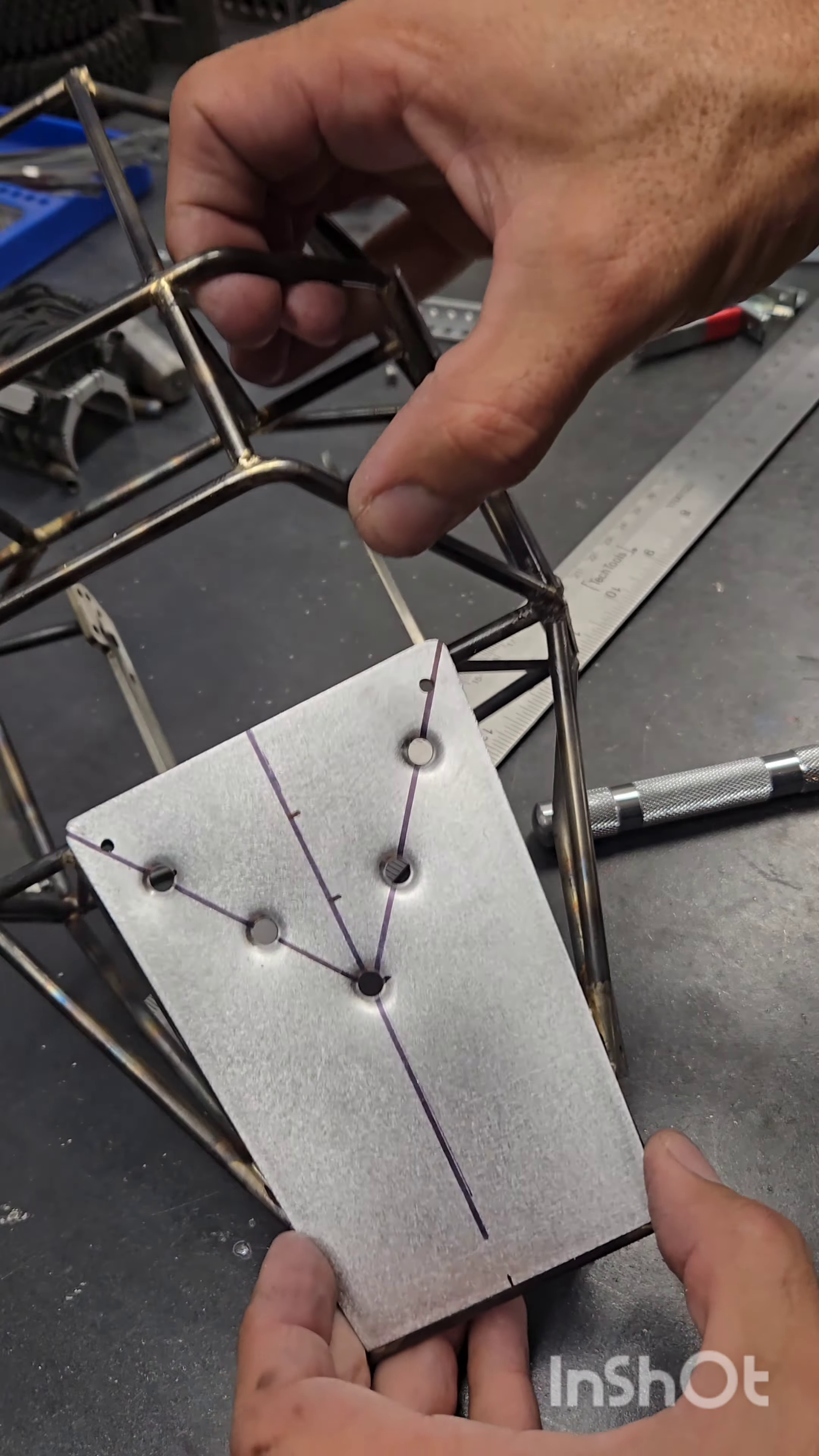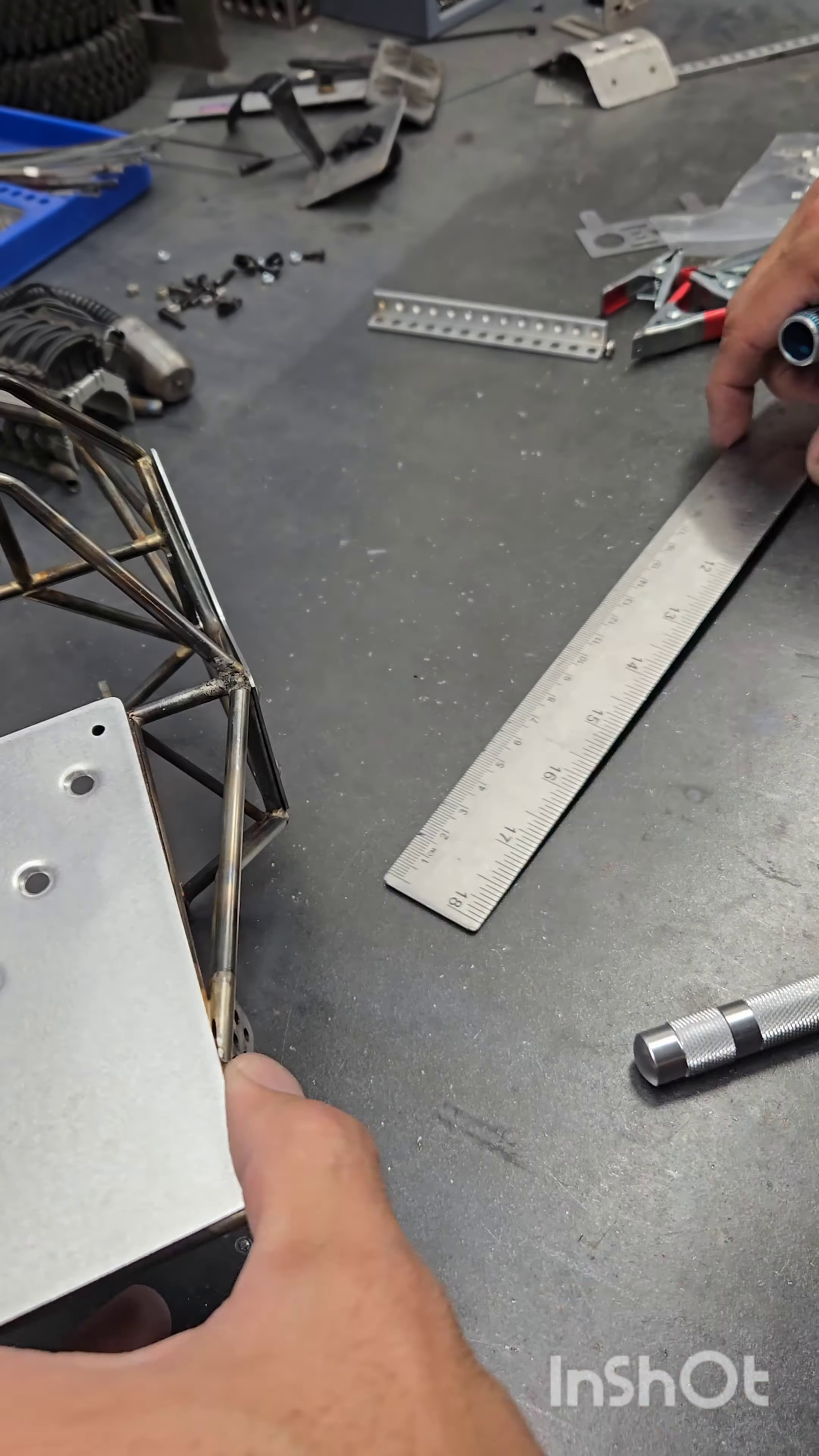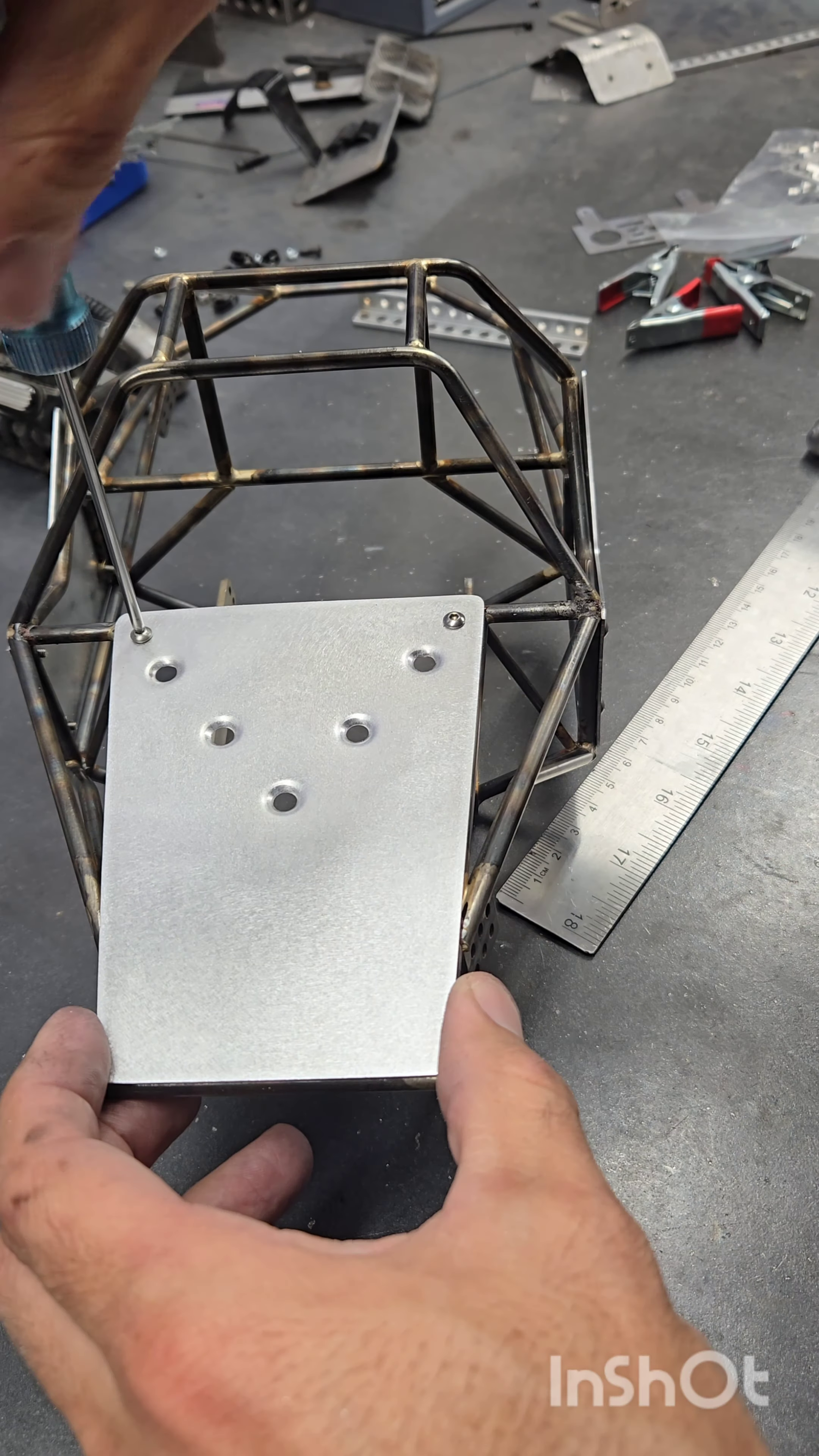I guess it's important to note, if you are going to use a dimple die, and you're going for that orbital sander look, be sure to do your fluff and buff before you dimple die it.